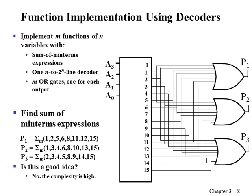Using decoders, you can also implement any arbitrary Boolean function. Since the decoder produces outputs corresponding to the minterms of a function, each output of an n-by-2^n decoder represents one minterm. For example, with a 4-by-16 decoder, output 0 is selected when the minterm index is 0 (all inputs are 0), output 1 represents minterm index 1, output 2 represents minterm index 2, and so on. This allows implementation of any arbitrary 4-variable Boolean function.